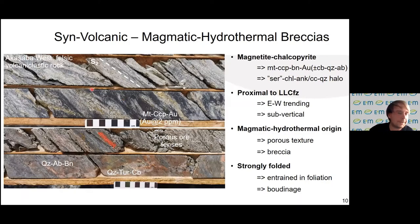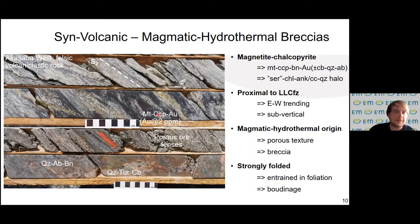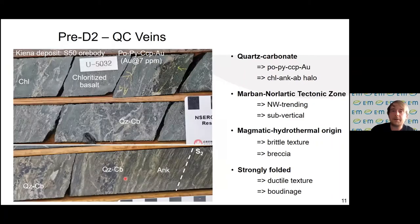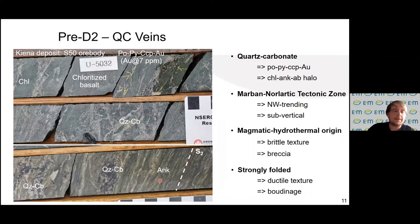Starting chronologically with our oldest traces of gold mineralization: we see an interesting magnetite-chalcopyrite fracture contained within felsic and volcaniclastic rocks of the Ewa Formation, proximal to the Pontiac sub-province, with gold contained within chalcopyrite up to 2 ppm. Two gold-copper lenses are strongly entrained within our S2 foliation, with cross-cutting quartz-tourmaline carbonate veins also present. Moving to our next younger style — quartz-carbonate veins — predominantly in the area around Kigena within the S50 ore body, we see strongly chloritized basalt hosting quartz-carbonate breccia as well as strongly foliated quartz-carbonate veins entrained within S2.